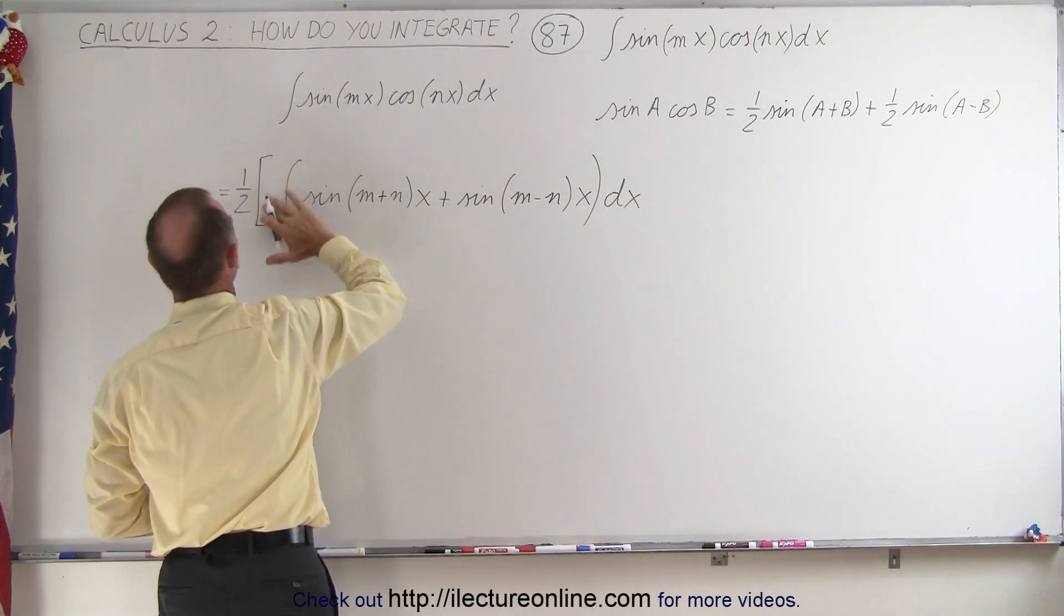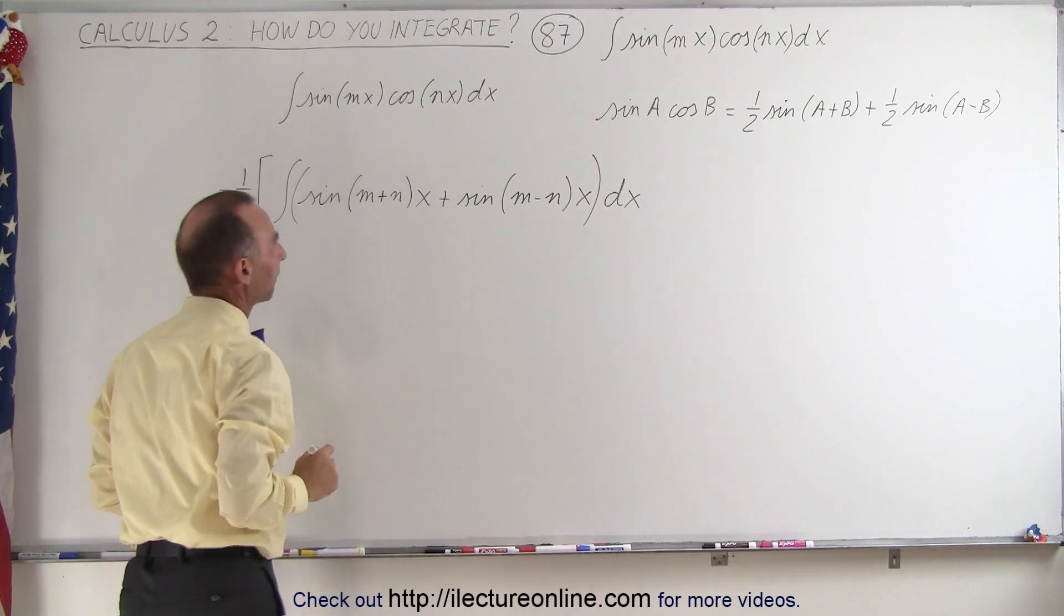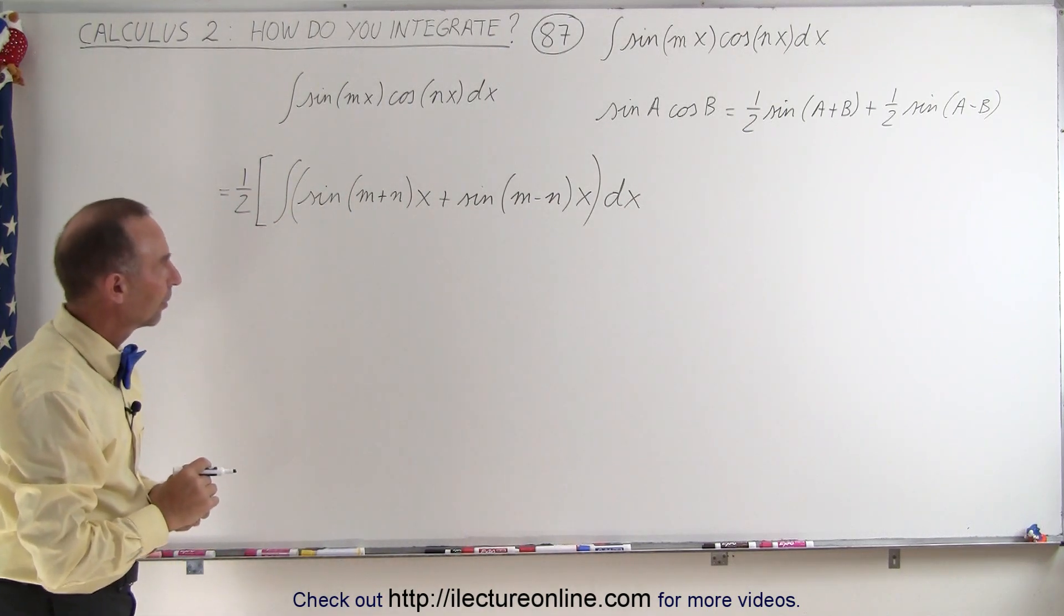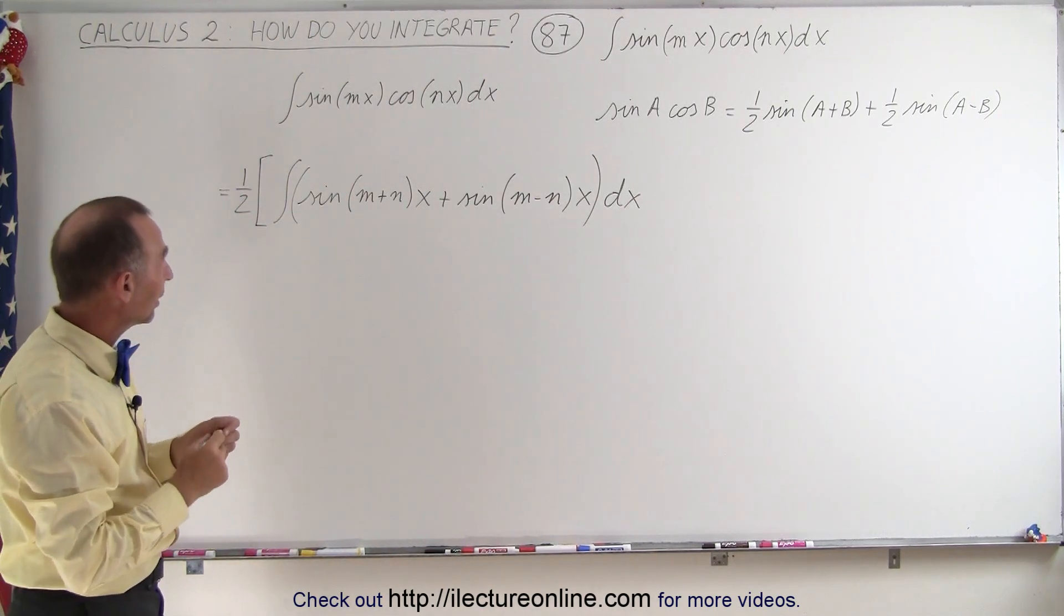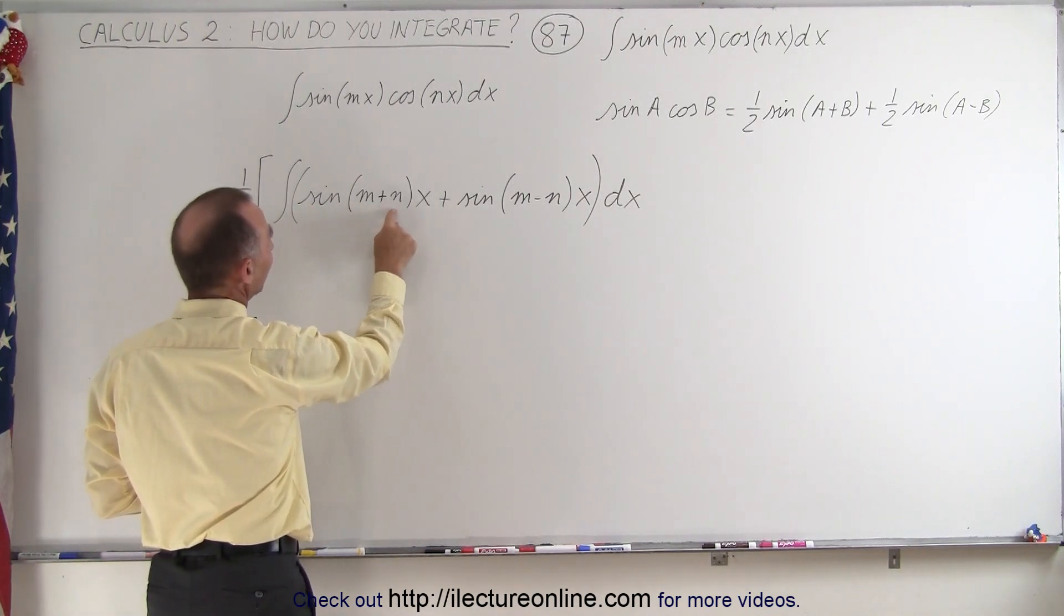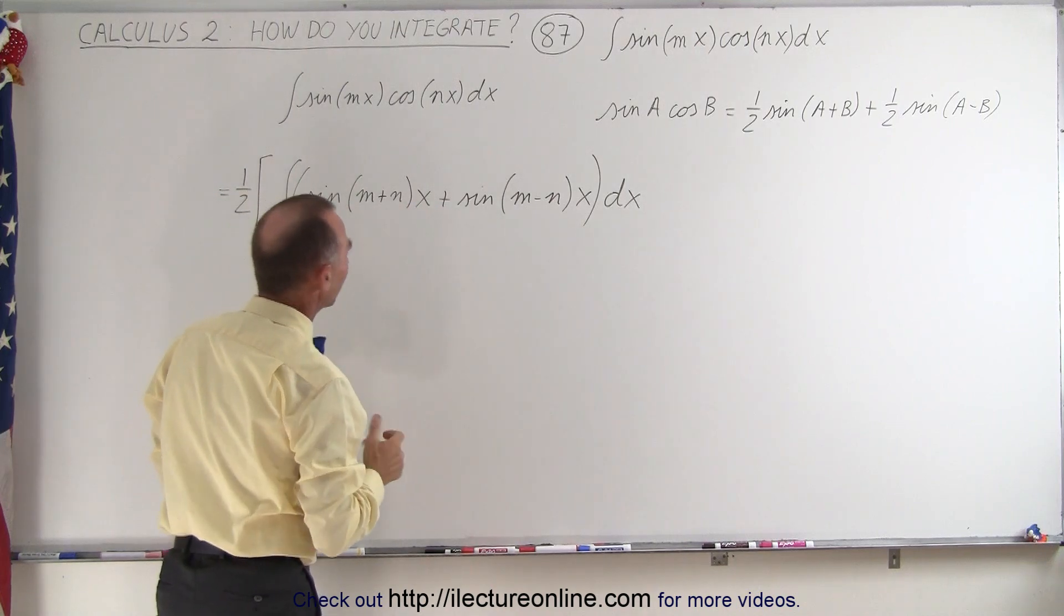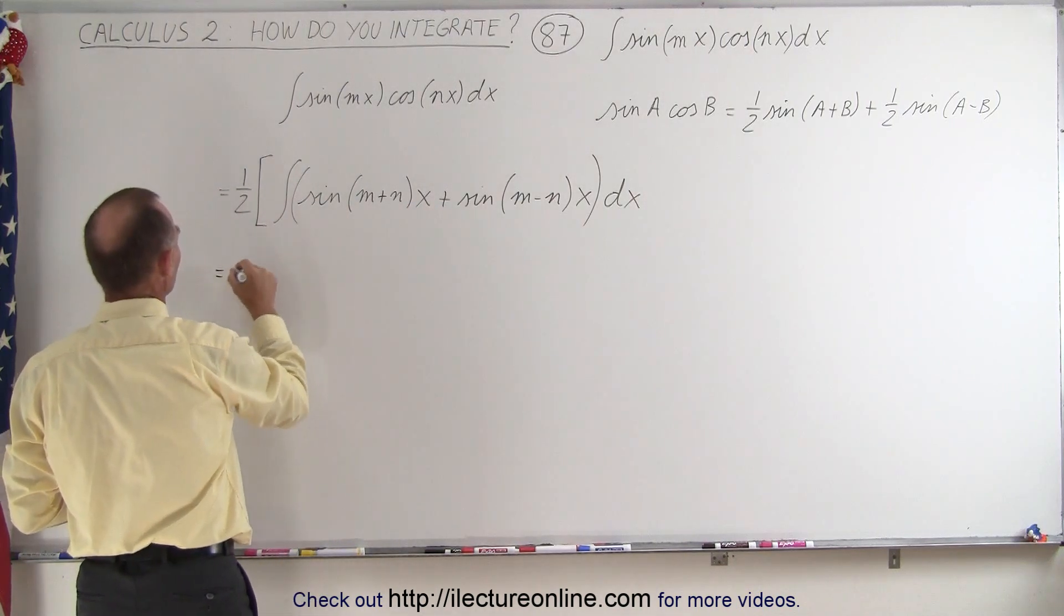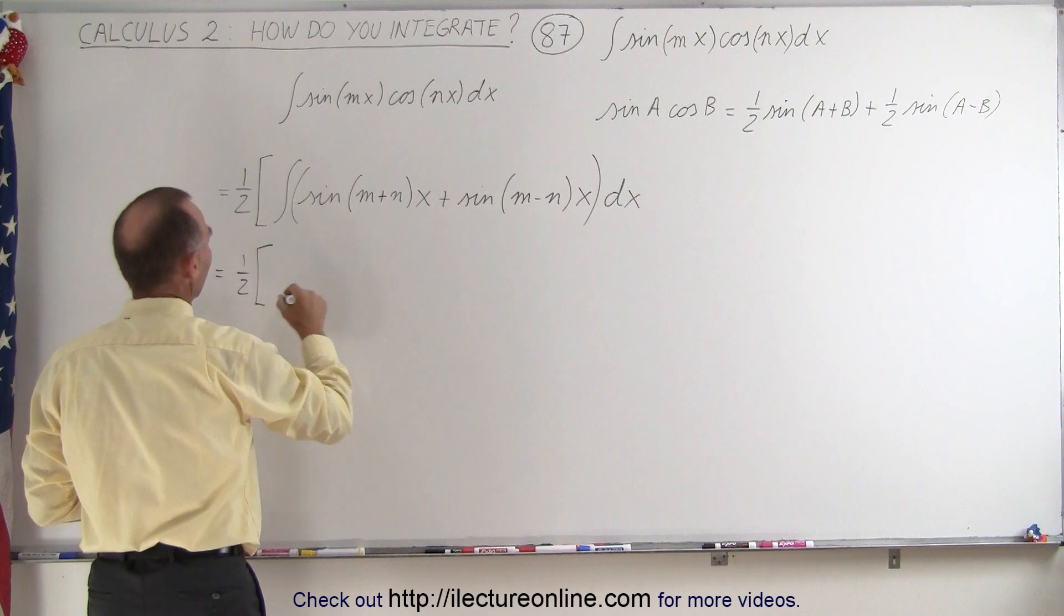Actually you probably want to put that inside. Now what we need to do is realize that when we try to integrate the sine of m plus n times x, we're going to need a proper differential. So this is equal to one half times,